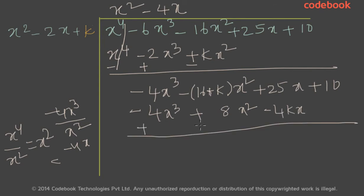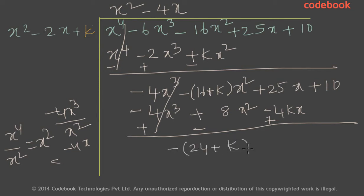Again, do the subtraction by changing the signs. So minus 4x cubed plus 4x cubed cancels out. Here you have minus (16 plus k)x squared minus 8x squared; adding these gives minus of (24 plus k)x squared. Then 25x plus 4kx gives (25 plus 4k)x, plus 10.